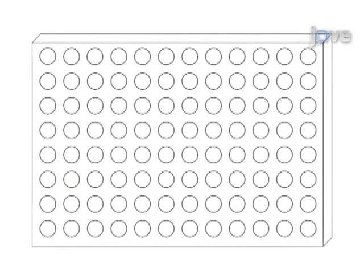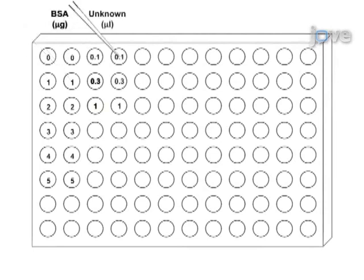The Bradford protein assay begins with the addition of a BSA standard in increasing quantities and dilutions of an unknown sample to a 96-well plate. Deionized water is added to complement the variable volume.